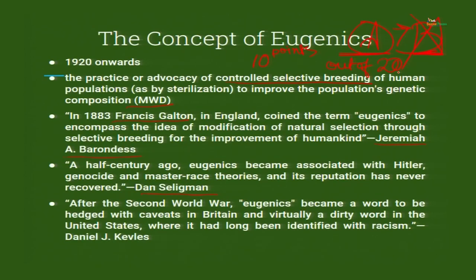The argument goes: if substandard human beings are more in number, the human race cannot improve, and they will only create trouble. So they should not be allowed to have children. After 50 years, A-type human beings — with very good physical abilities, sharp memory, high intelligence quotient, good emotional and social quotient — will be more in number, and society will progress faster. That is the idea of eugenics.